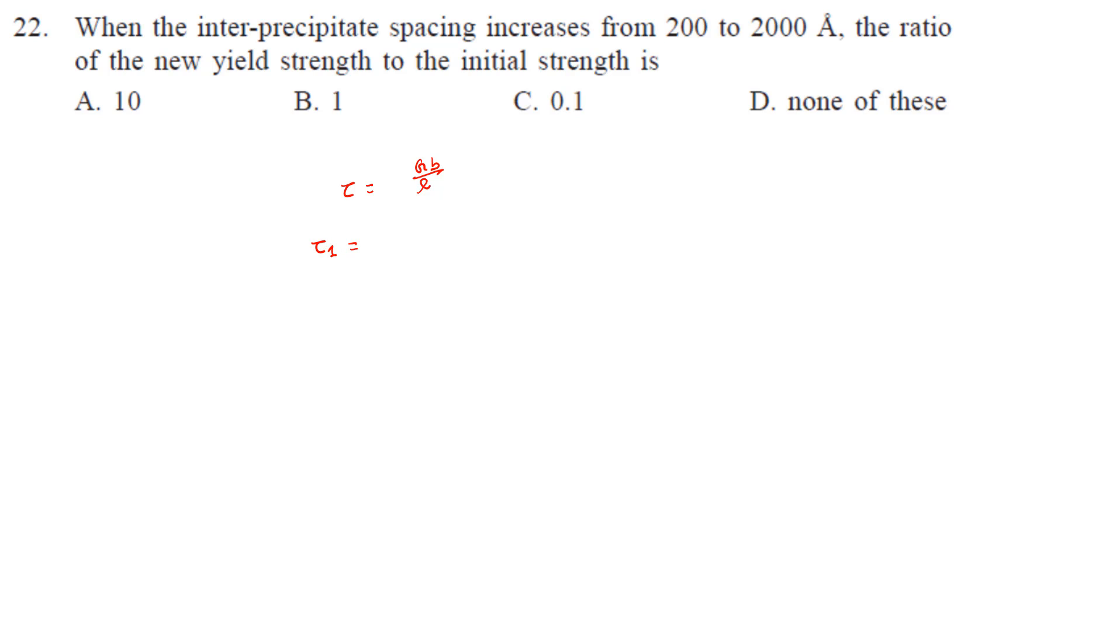Tau 1 will be Gb by 200 angstrom. Tau 2 will be Gb upon 2000 angstrom. Now let us divide these two. The ratio of tau 2 by tau 1 is 1 by 10, that is 0.1.